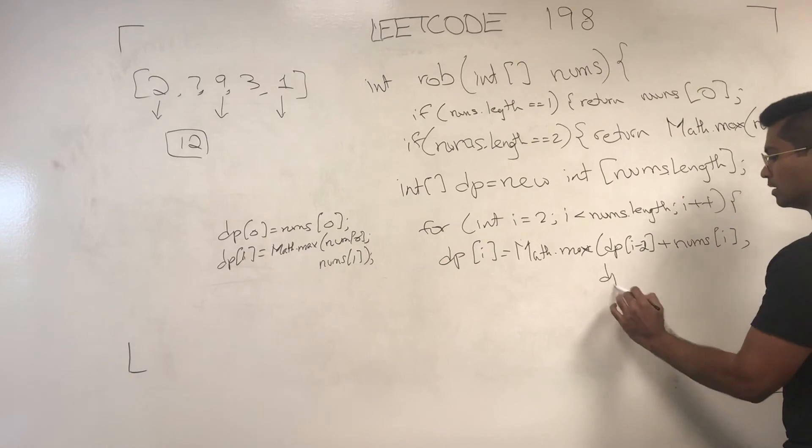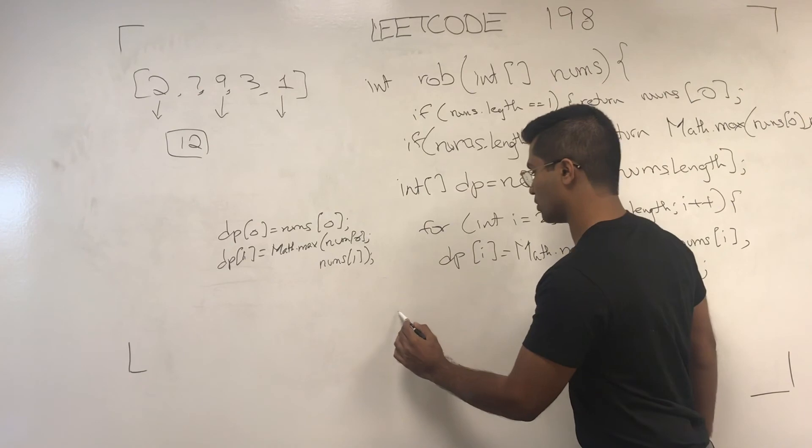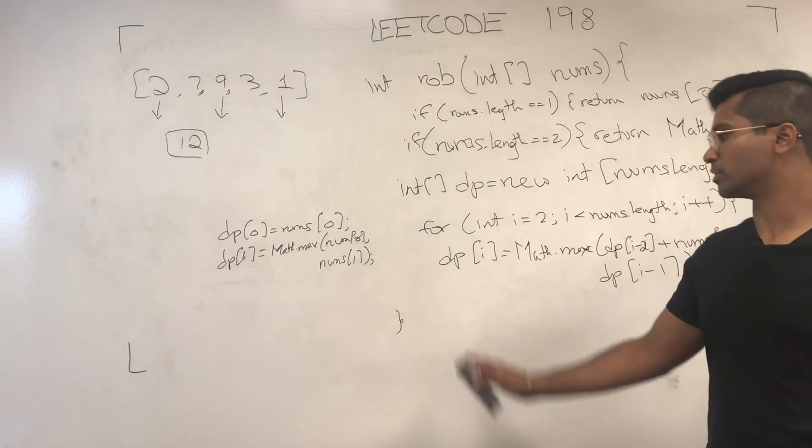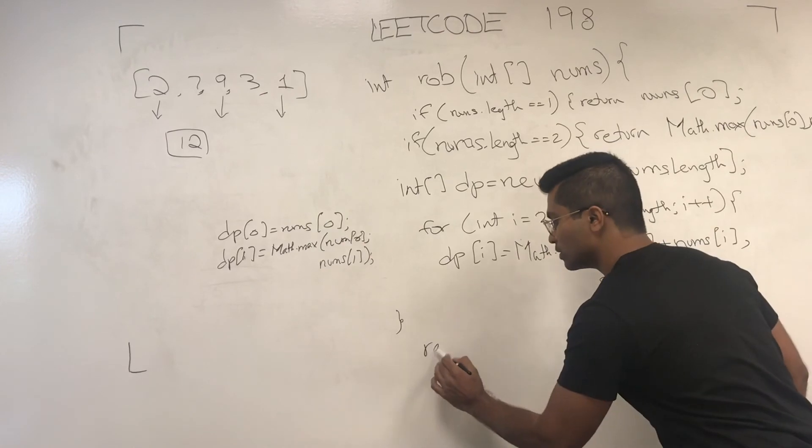DP of i minus 2 if I take the current house I'm at, or if I skip this house I'm not going to steal anything more, so I'm essentially going to have the same maximum until the previous one.